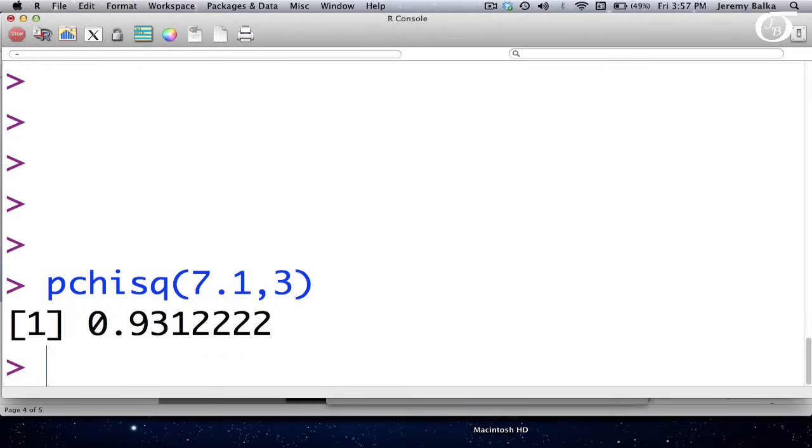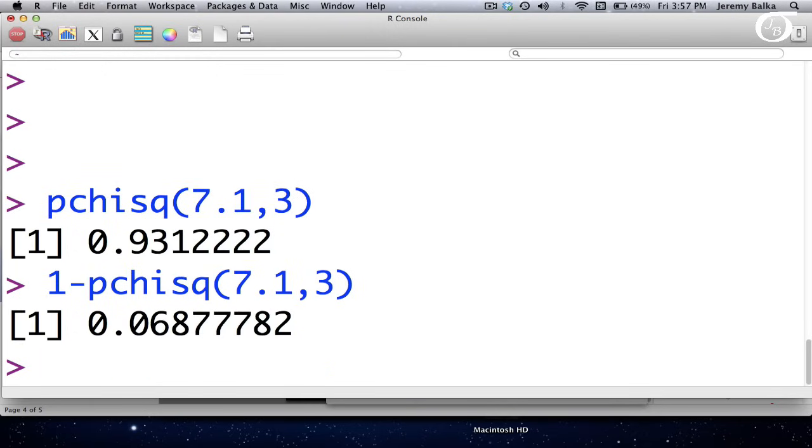Well that's a simple adjustment. It's simply going to be 1 minus that. So if I put in 1 minus that command, I get the p-value that we need, 0.069 to 3 decimal places.